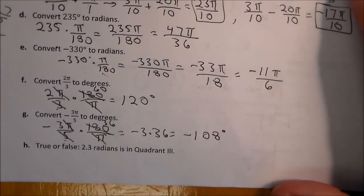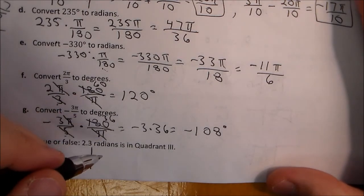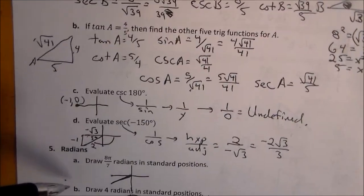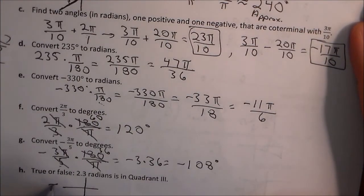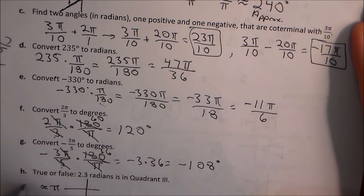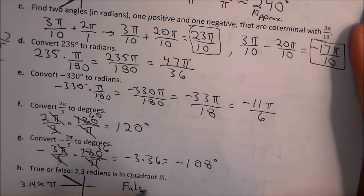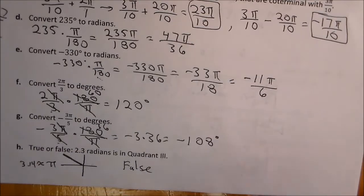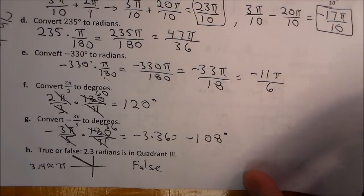True or false: 2.3 radians is in quadrant three. Using what we know, π is approximately 3.14. Since 2.3 is less than π (3.14), the angle hasn't yet reached the negative x-axis, so it's going to be in quadrant two. So the statement is false — 2.3 radians is in quadrant two because it's less than π.